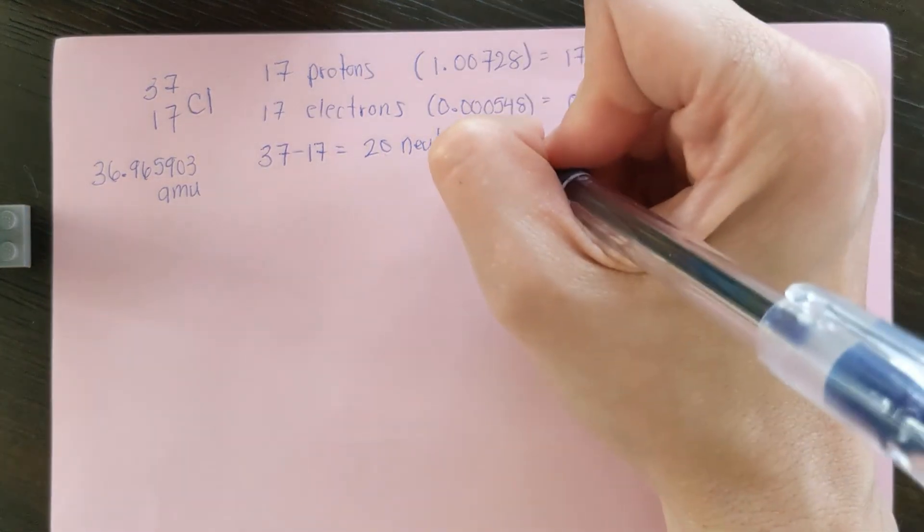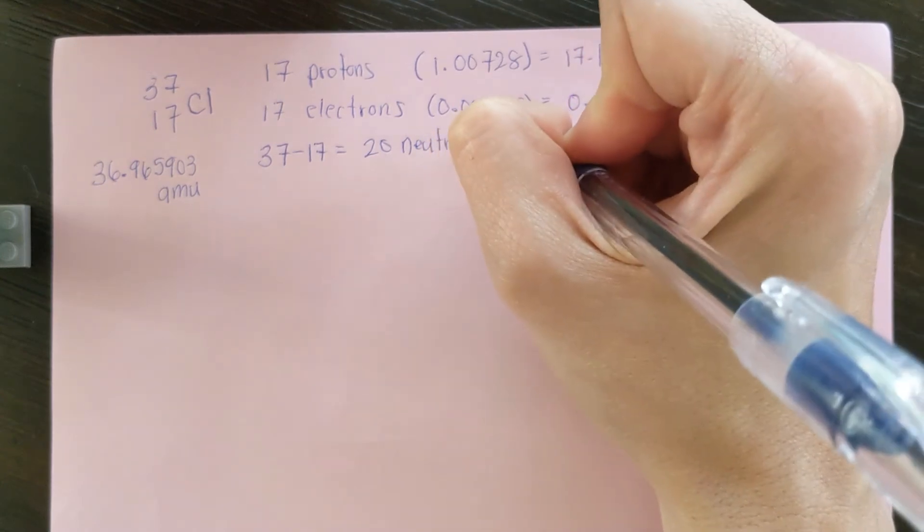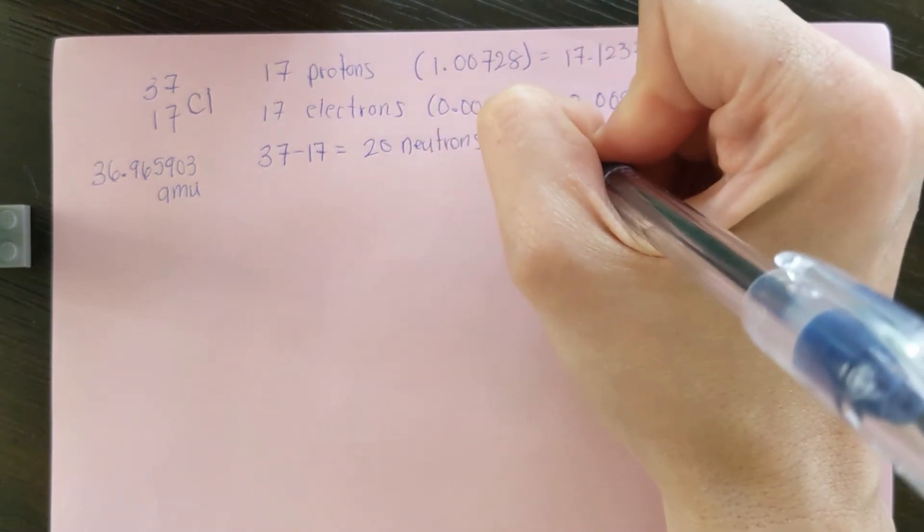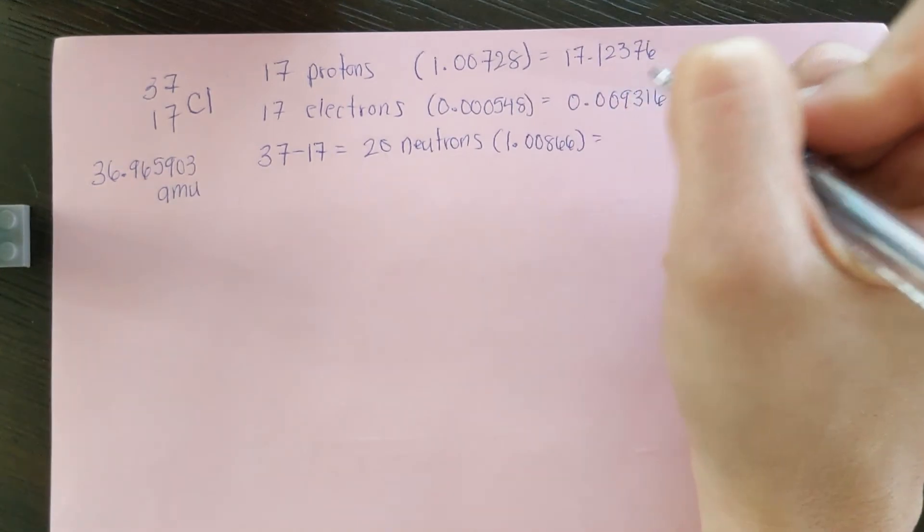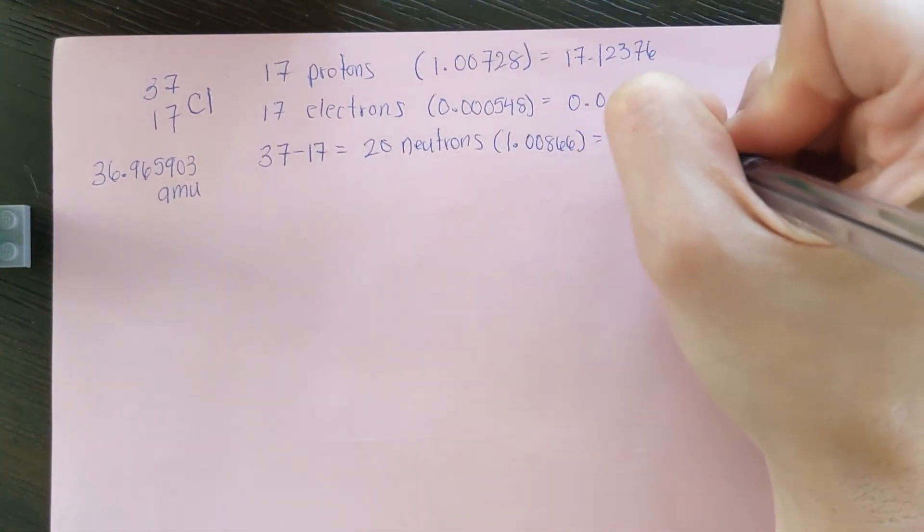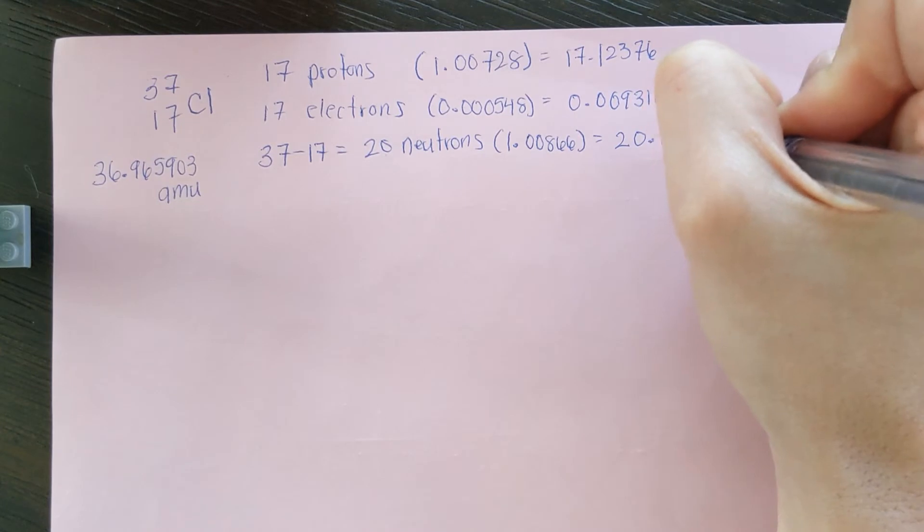And now for our 20 neutrons, we're going to multiply that by 1.00866 atomic mass units to get a mass of 20.1732.